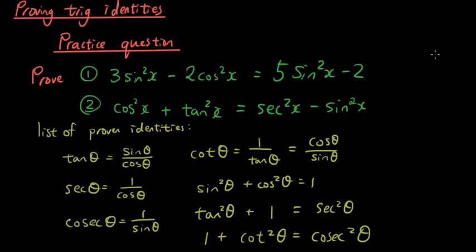Let's work on the first one: 3 sin squared x minus 2 cos squared x equals 5 sin squared x minus 2.